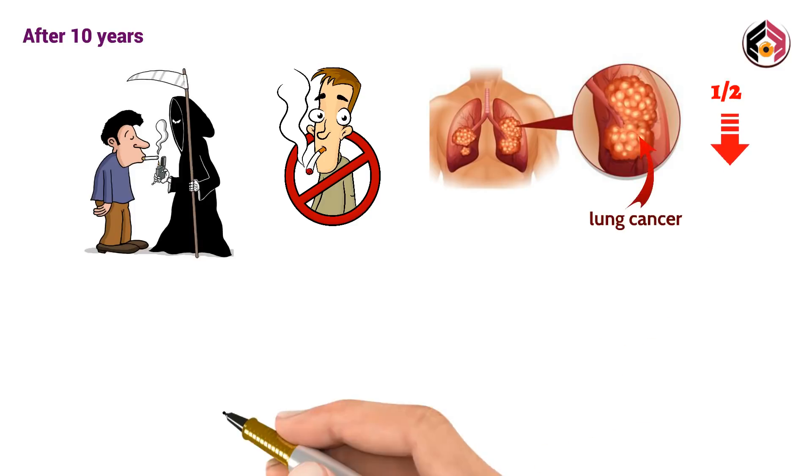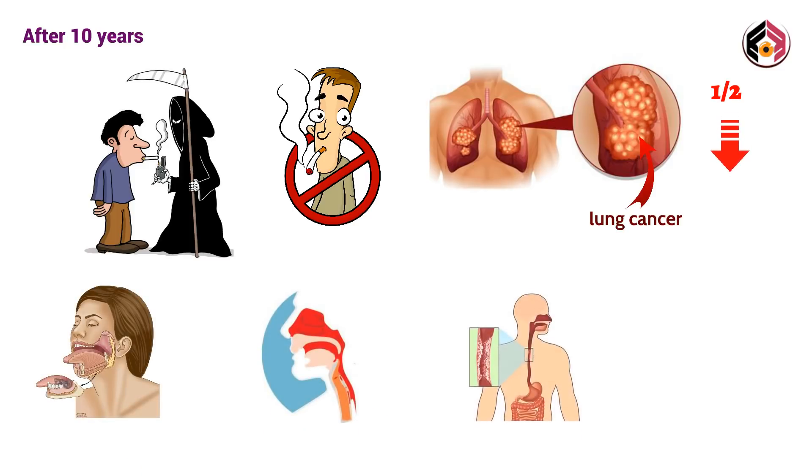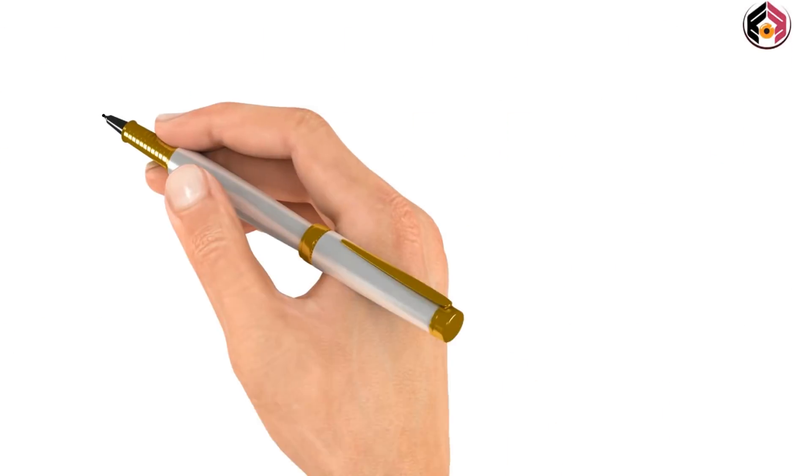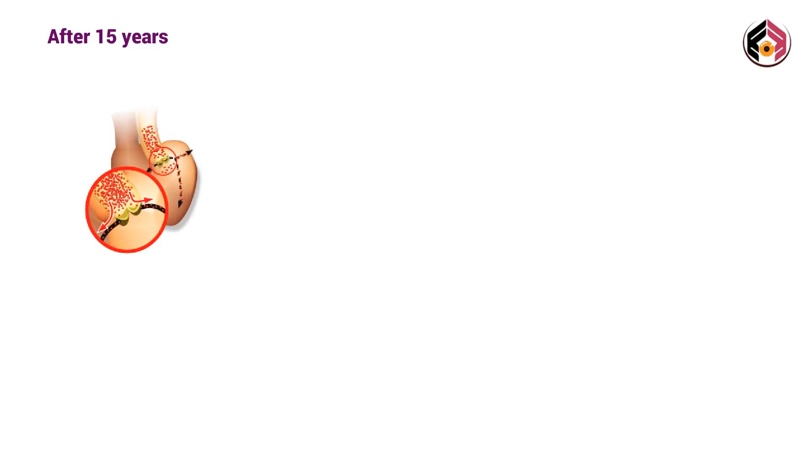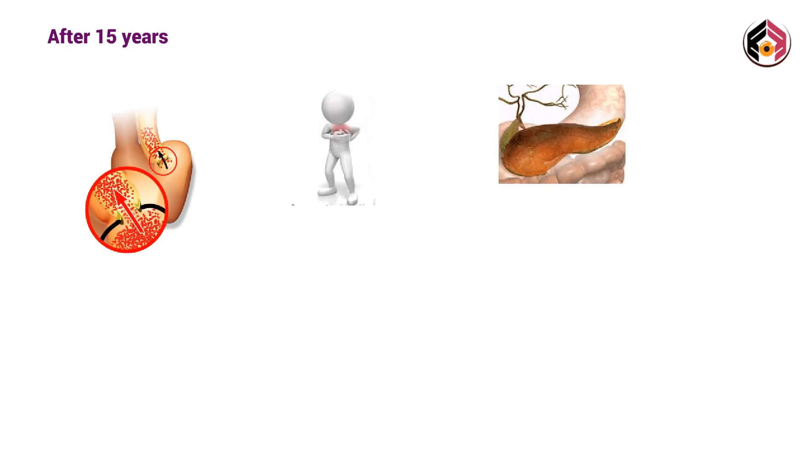The risk of cancer of the mouth, throat, esophagus, or bladder is half that of a smoker's. After 15 years of not smoking, chances of developing coronary heart disease are the same as a person who has never smoked in their life. Similarly, the risk of developing pancreatic cancer has reduced to that of a non-smoker.